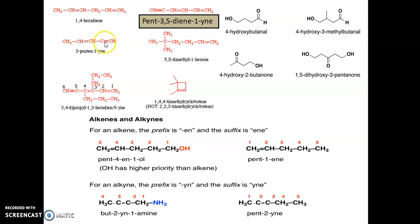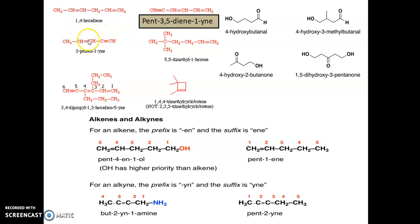The next compound has both a double bond and a triple bond. Since triple bond has priority, start numbering from the right side. There are five carbon atoms, so pent-. The second priority group is the double bond at position 3: pent-3-en-. The first priority group is the alkyne at position 1: pent-3-en-1-yne. Both 'pent-3-en-1-yne' and '3-penten-1-yne' are correct.